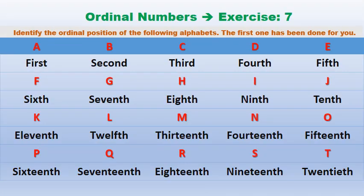Today we will solve Exercise number 7 on page number 8: Identify the ordinal position of the following alphabets. The first one has been done for you. Students, in your book the spellings from first to twentieth are given. You need to write the alphabets A to T above them on your own, so that you remember which position each alphabet is at.